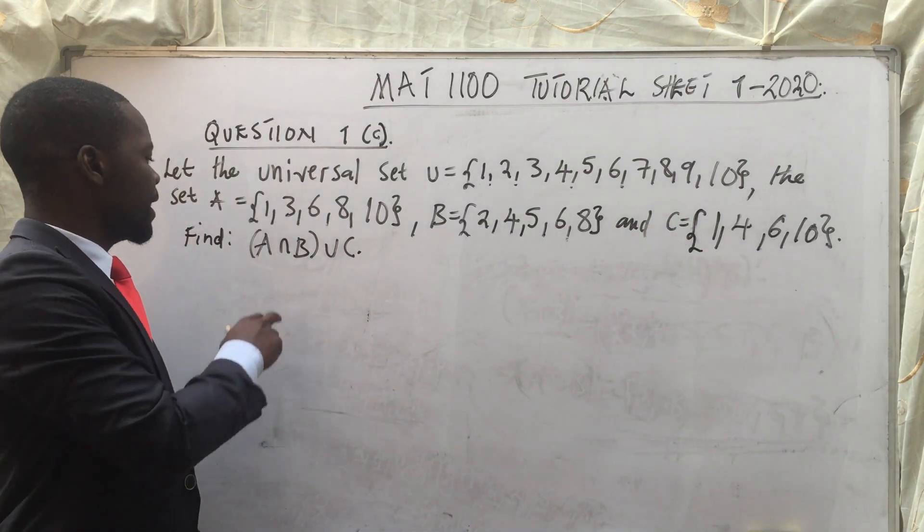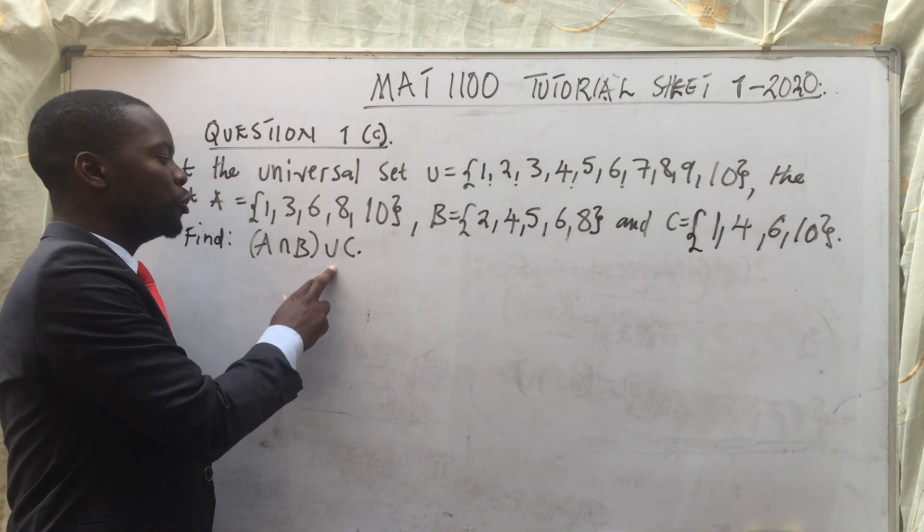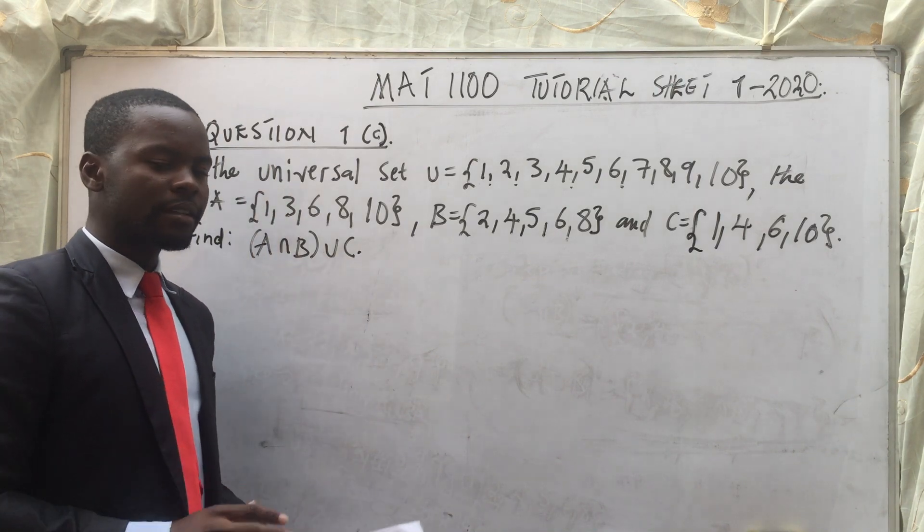The question is saying, calculate or find A intersection B complement union C. Very simple calculation.